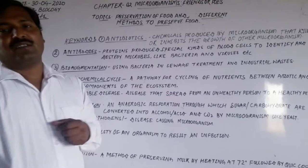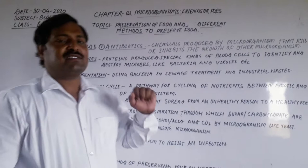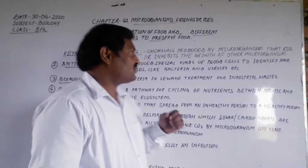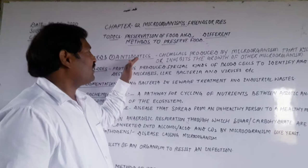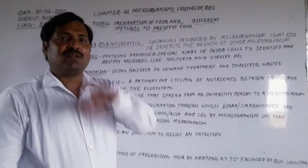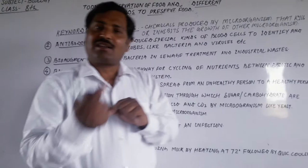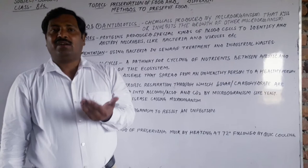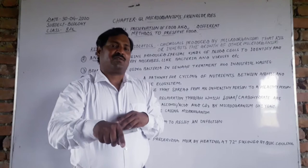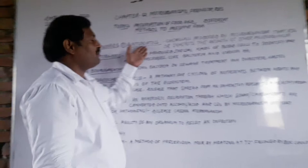Antibiotics are the chemicals produced by microorganisms that inhibit or kill the growth of other microorganisms. So one microorganism on one hand is harmful to us, and on the other hand, other microorganisms can kill those harmful microorganisms. This is the first topic: antibiotics.